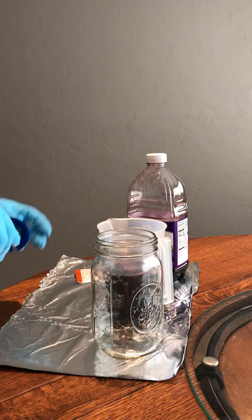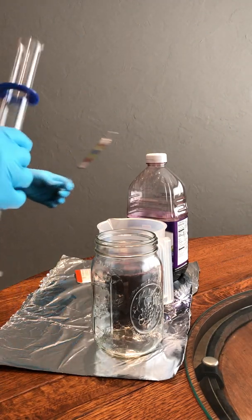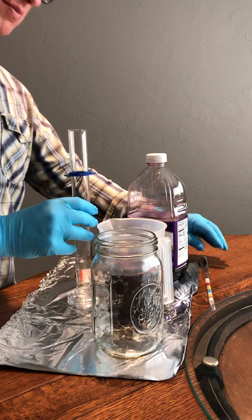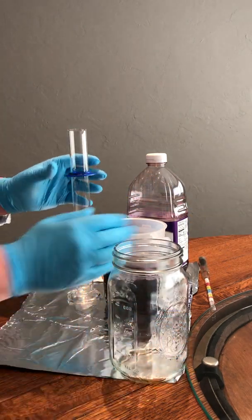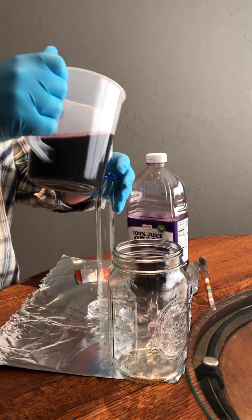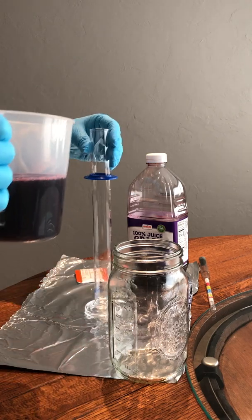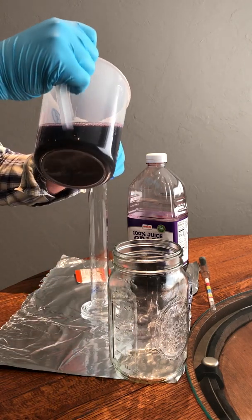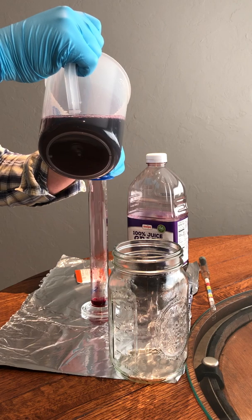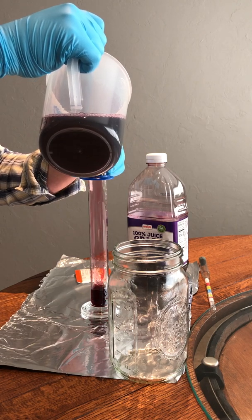Importantly, what we want to determine before we add the yeast is the specific gravity or density of the grape juice. This is going to matter when we measure for alcohol content in, say, about a week.